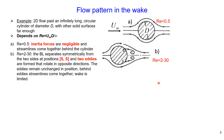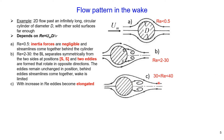With further increase in Reynolds number — between 30 and 40 — the eddies become elongated, and the streamlines behind again come together.